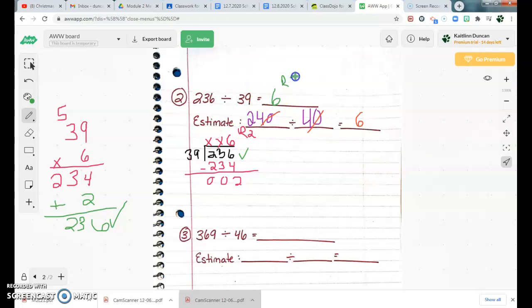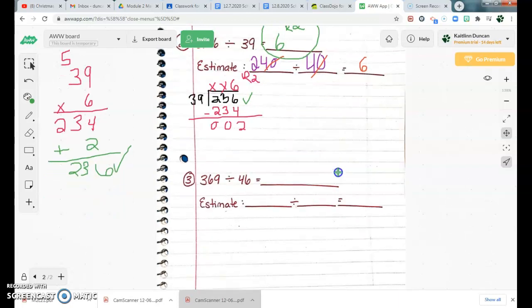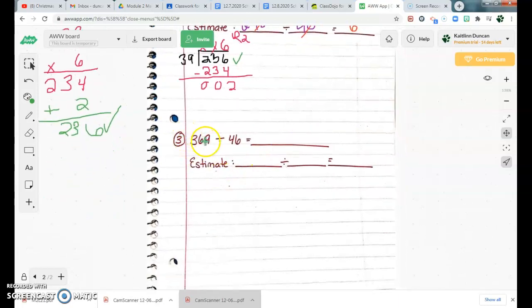So my final quotient is 6 remainder 2. If you guys do the estimating, solving, and checking, there's no reason your answers should be wrong. It's a foolproof system. Okay? All right, now we are going to go down to our last problem, which is 369 divided by 46.